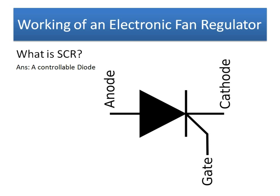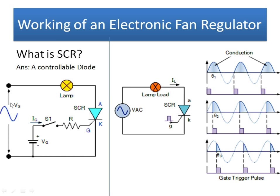How the SCR works: similar to a diode, when positive voltage is applied to the anode and negative to the cathode, current flows; for reverse polarity it doesn't. However, for the SCR to conduct there is one more requirement — the voltage must be positive across anode and cathode AND the gate must be supplied. Until and unless the gate is supplied, there will be no current flowing through the SCR, even if the anode-cathode voltage is correct.